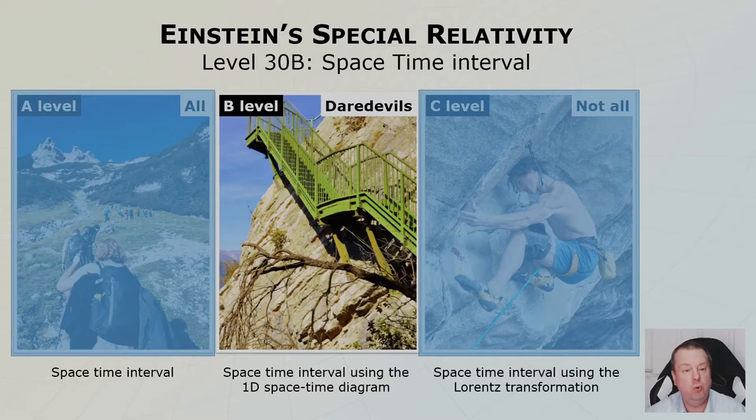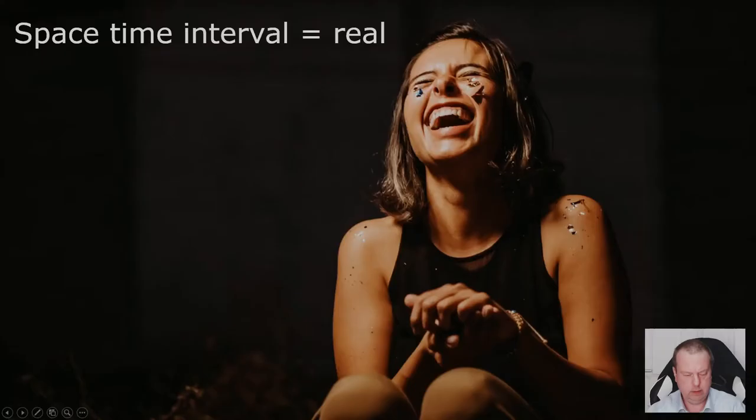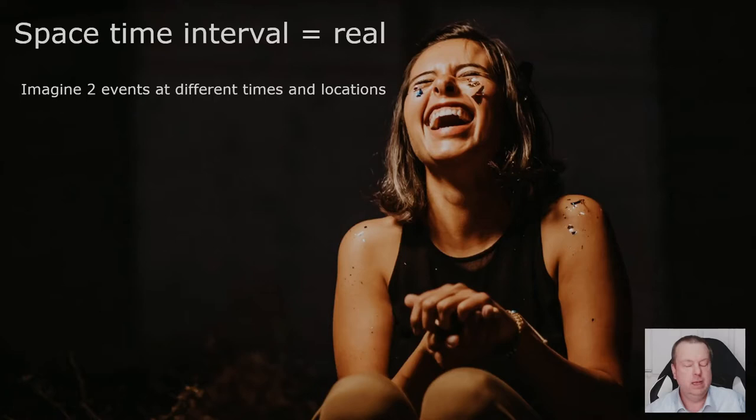This is the B level and to be honest I think the B level is more intuitive than the A level. So let's get into it. So the space-time interval is real and therefore we can be happy. What is it?